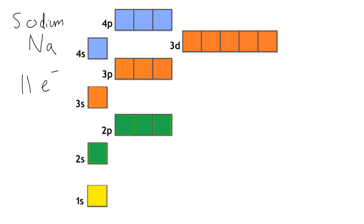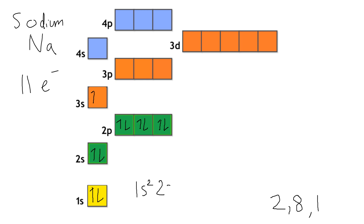When we get to sodium, we've got 11 electrons. Its Bohr configuration would be 2, 8 — and now that's full, it can't hold any more — so we then start the next shell: 2, 8, 1. So you'd have 1s2, 2s2, and then we've got six electrons to go into the 2p, so we put one in each box and then go back and double fill. So far we've used ten electrons, so one needs to go into the 3s. Its electron configuration is 1s2, 2s2, 2p6, 3s1.